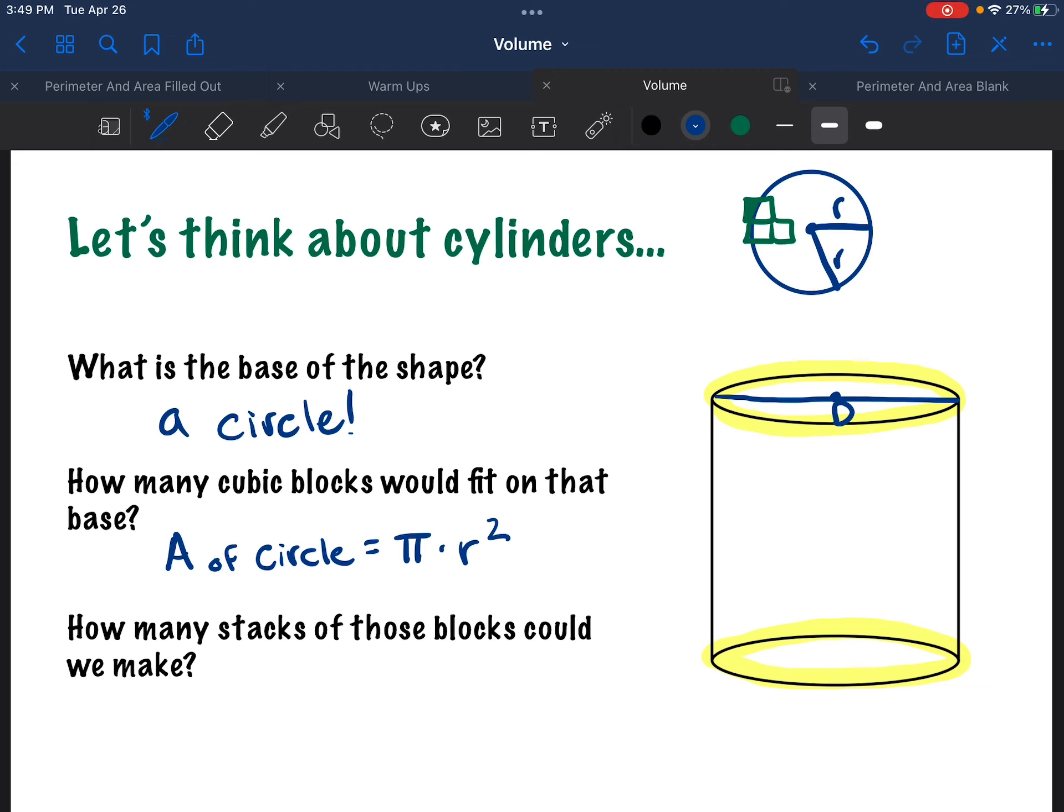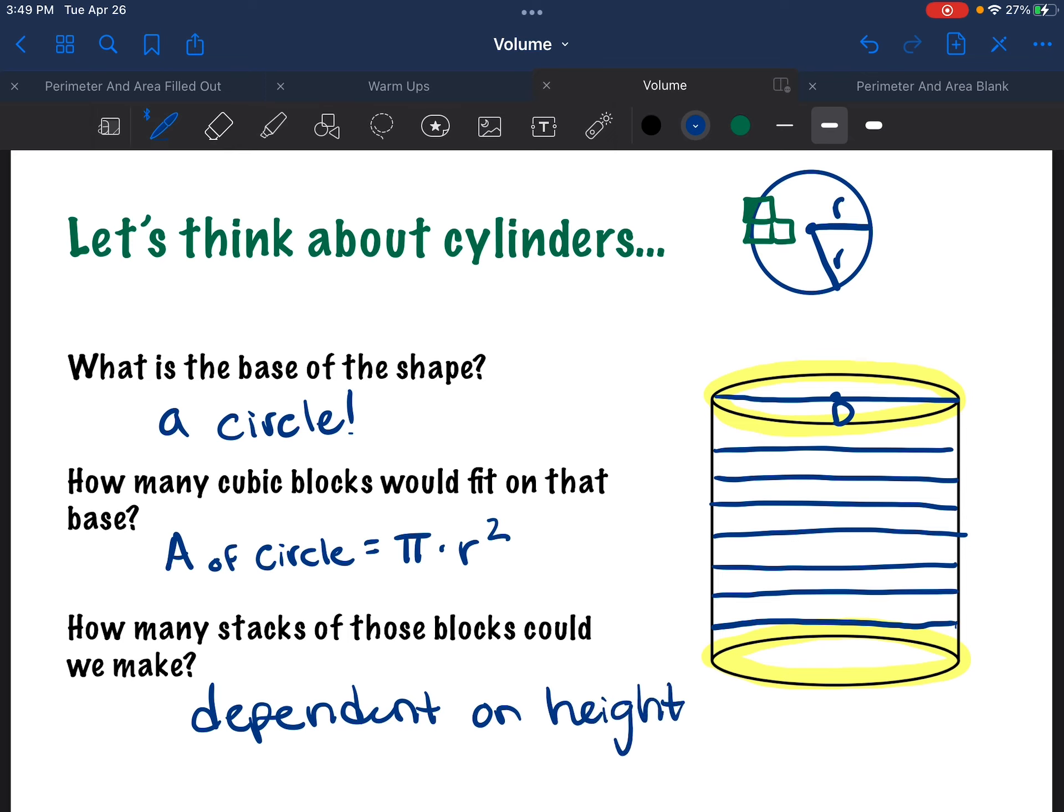Now we need to ask, how many stacks of those blocks could we make? So if I put blocks all the way across the bottom of this cylinder, so it's filling it up, how many times could I stack those blocks until this whole cylinder was filled up with blocks? Because that's going to tell me how many blocks in total there are. That's what we did with the last rectangular prism, right? How many stacks is dependent on the height.